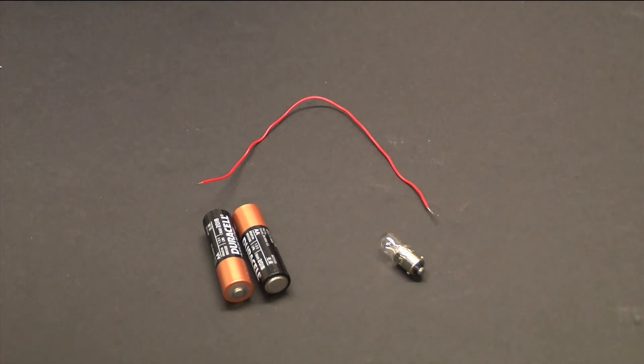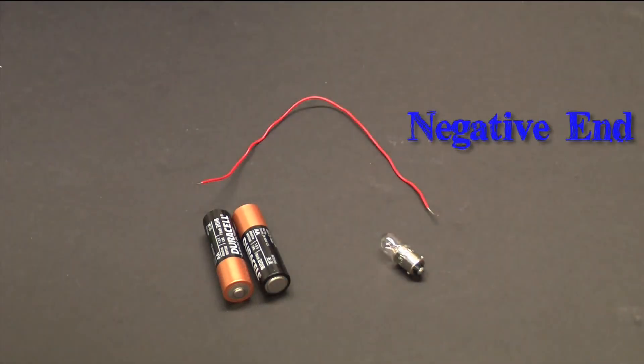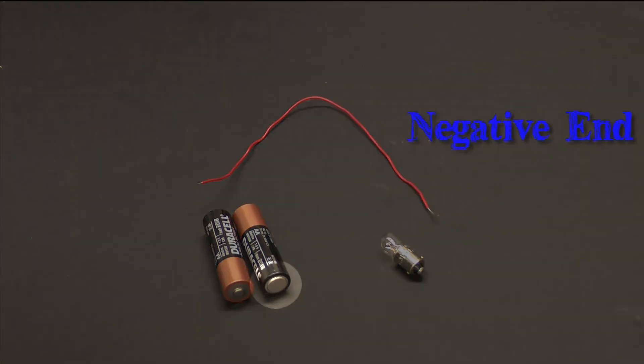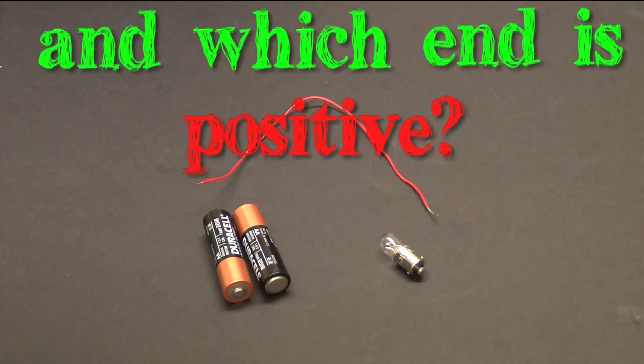The AA battery is a source of electricity. The positive end is marked with a plus sign and has a small round metal tip. The negative end has a flat metal surface. Look at your AA battery closely. Can you tell which end is negative and which end is positive?